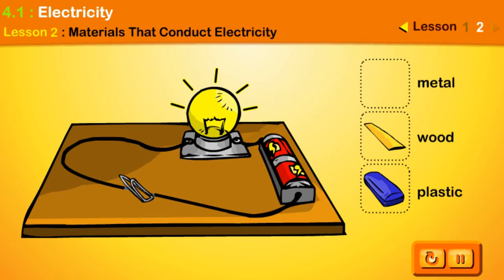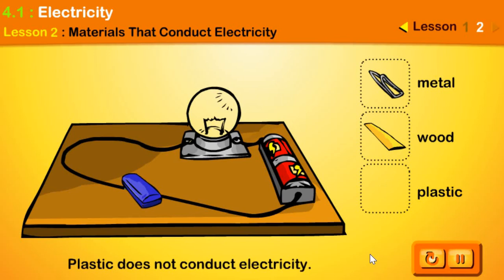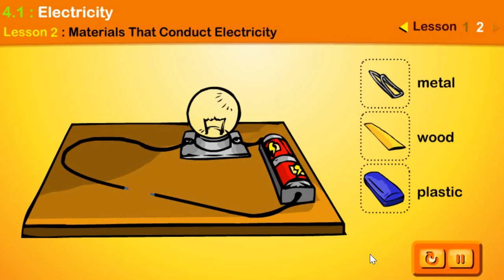Look, this object makes the bulb glow. It conducts electricity. Metal conducts electricity. The bulb does not conduct electricity. Wood does not conduct electricity either.